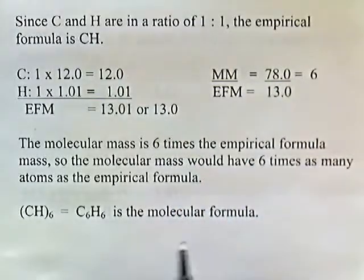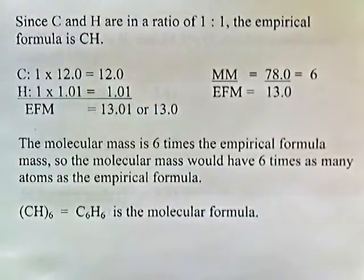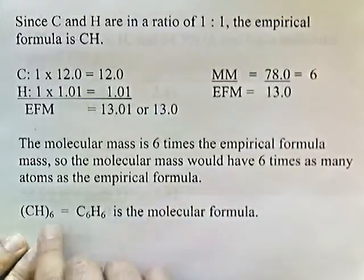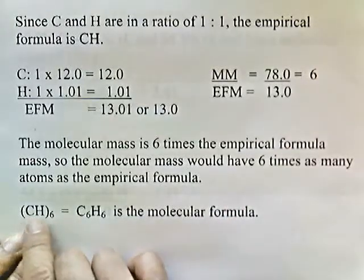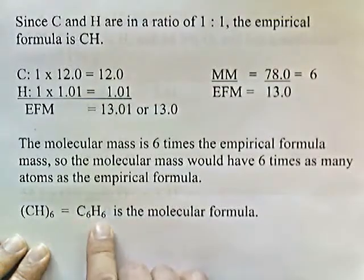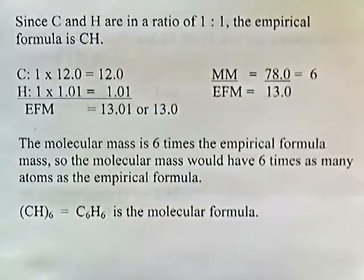The molecular mass is 6 times the empirical formula, meaning the molecular formula has 6 times as many atoms. So we multiply all subscripts in the empirical formula CH by 6, giving C6H6. That is the molecular formula.